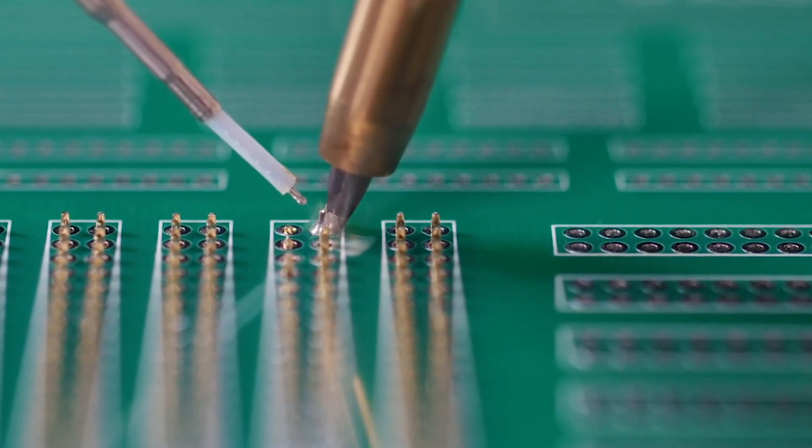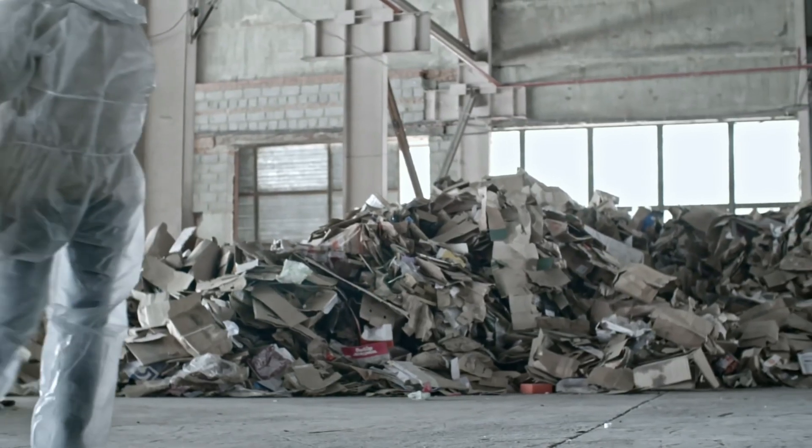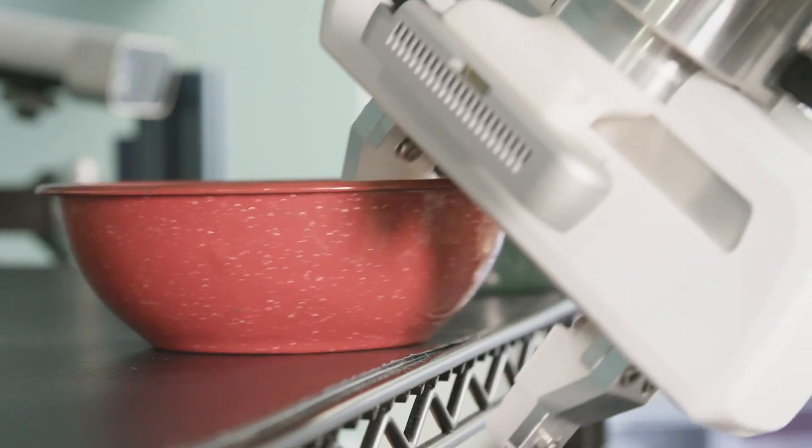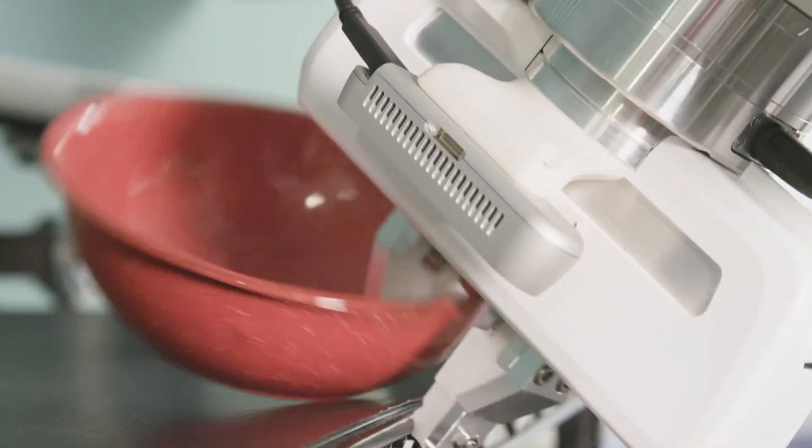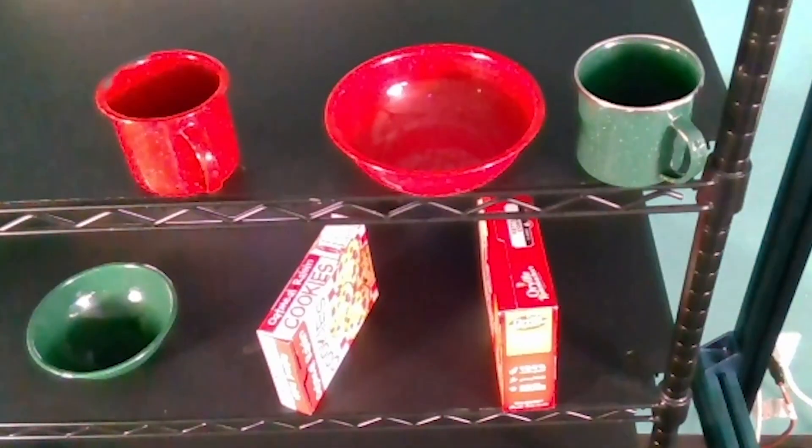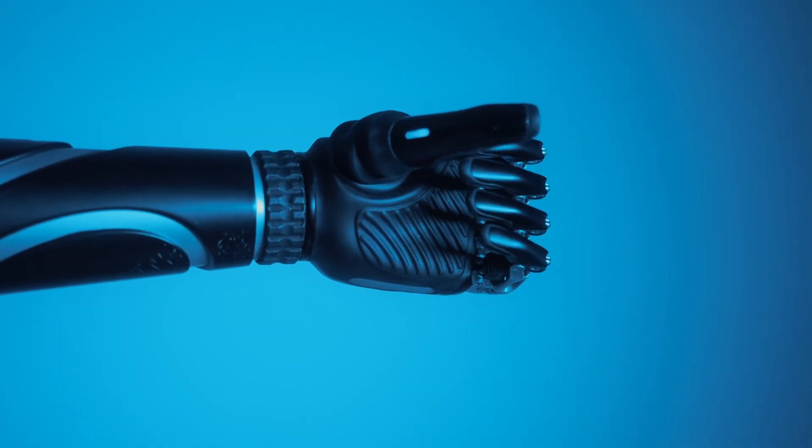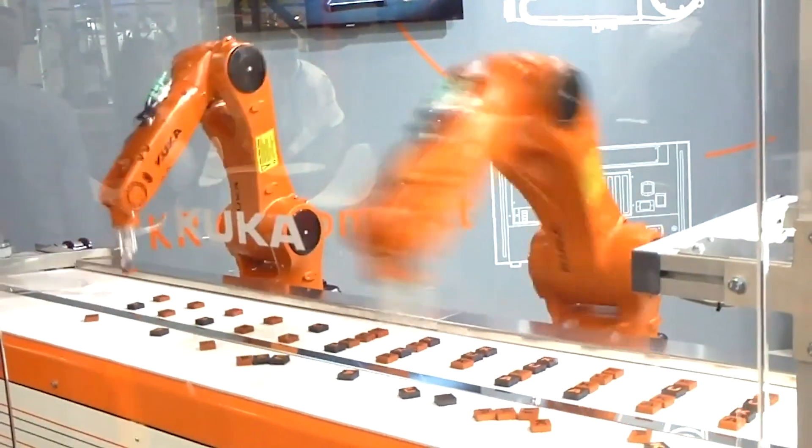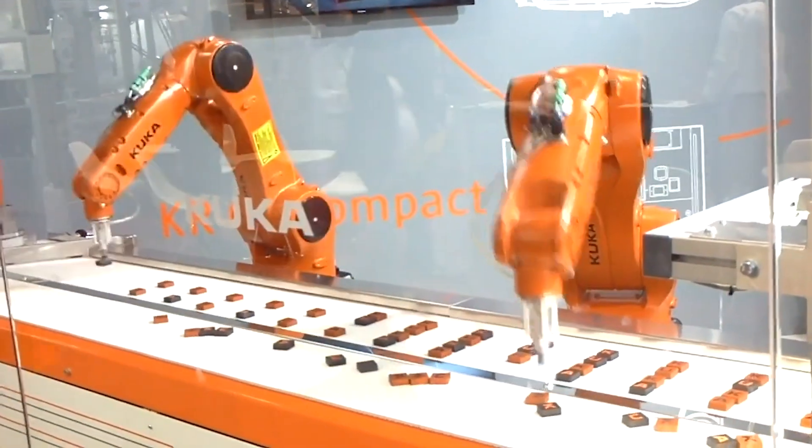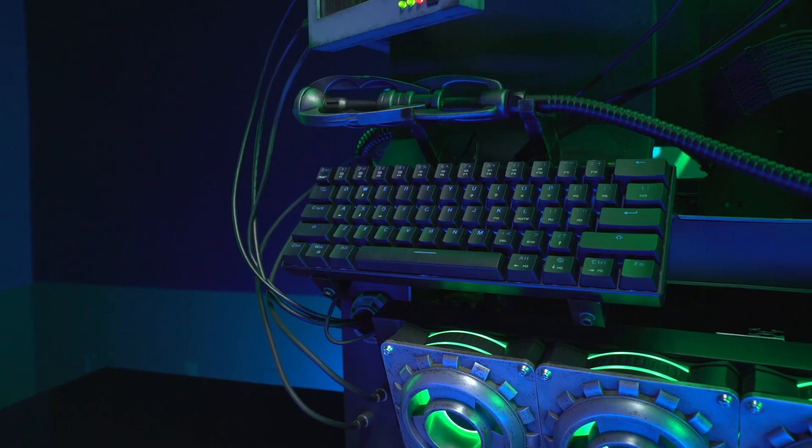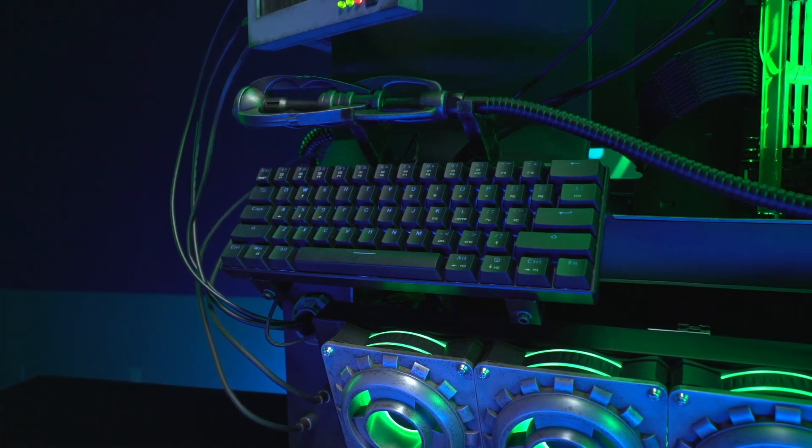Model to improve robots' ability to hand over objects. For decades, researchers worldwide have been trying to develop robots that can efficiently assist humans and work alongside them as they tackle a variety of everyday tasks. To do this effectively, however, the robots should be able to interact naturally with humans, including handing them and receiving objects from them. Researchers at NVIDIA have recently developed a model that could be used to enhance the ability of robots to naturally pass and receive objects from human agents.